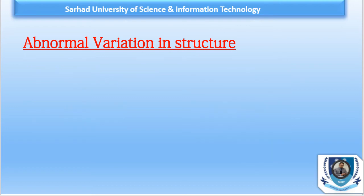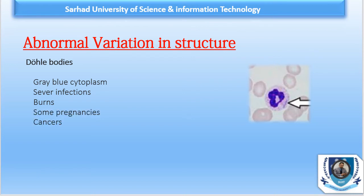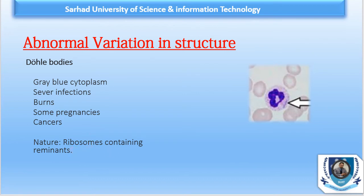The third abnormal variation is Döhle bodies. These are single or multiple granular cytoplasmic inclusions usually seen along the outer edge of mature neutrophils, and are commonly associated with severe infections, burns, and sometimes with pregnancies or cancer. Döhle bodies are thought to be ribosome-containing remnants of the promyelocyte cytoplasm. They appear as gray-blue cytoplasmic inclusions.